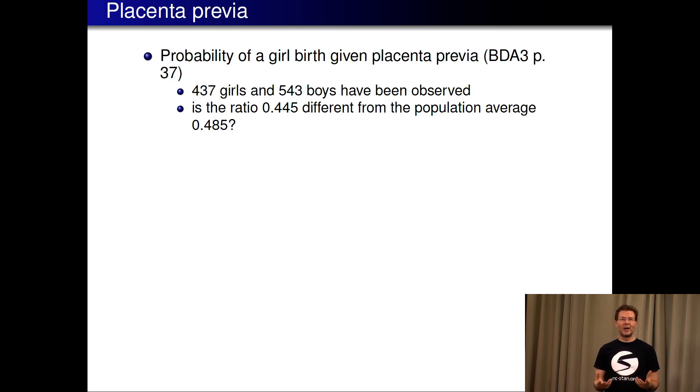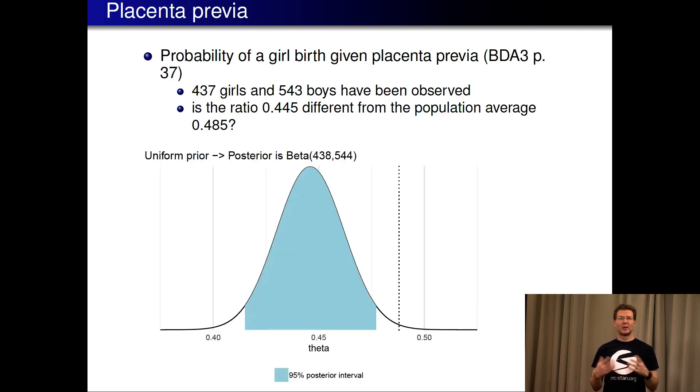We can then, if we use uniform prior, we can use the beta distribution, look at the values, we can plot the distribution. But we can also look at this from the posterior distribution. We can compute 95 percent posterior interval and the population average is not inside that. We could also compute what is the probability that the ratio is smaller than the population average. We can see that there's some small chance that in the placenta previa also this sex ratio would be even larger than the population average, but it's also quite likely that it's clearly smaller.